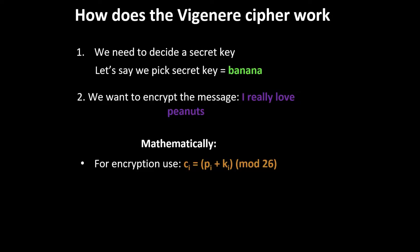Mathematically, how we encrypt using the Vigenère cipher: the i-th letter of our encrypted message is the i-th plaintext letter plus the i-th letter of our secret key — in this case "banana" — and then we take that modulus 26. For decryption, we do the same except we take the encrypted letter and subtract the key, again in mod 26.